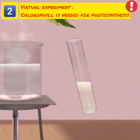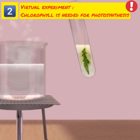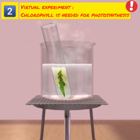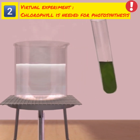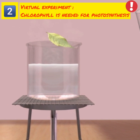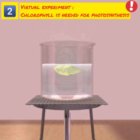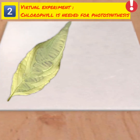Transfer the leaf into a test tube containing ethanol and place it in the hot water to get rid of the chlorophyll in the leaf. Once the leaf is decolorized, remove the leaf and put it into warm water to soften the leaf and remove the alcohol content. Remove the leaf and spread it onto a white tile.